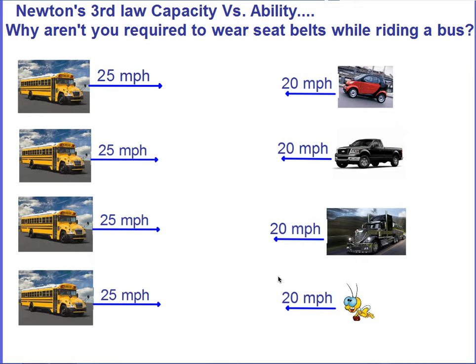In every one of these scenarios, I have the same bus moving at the same speed. Over here I have four different objects that the bus will collide with, all traveling at the same kinds of speeds.